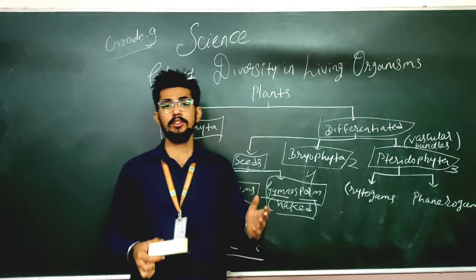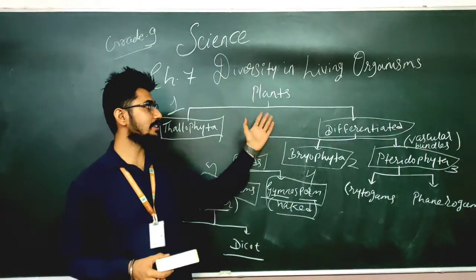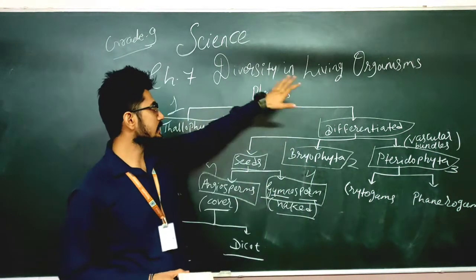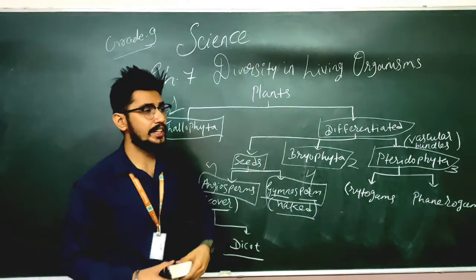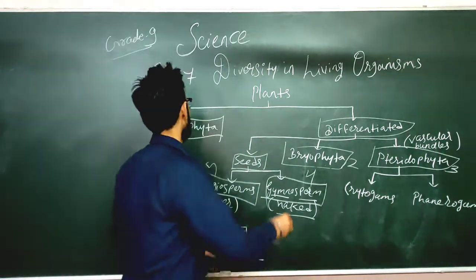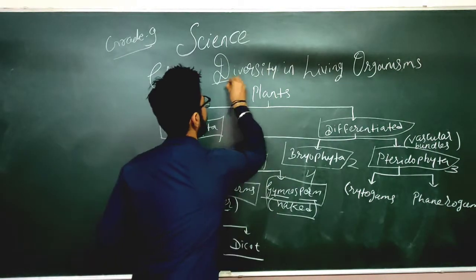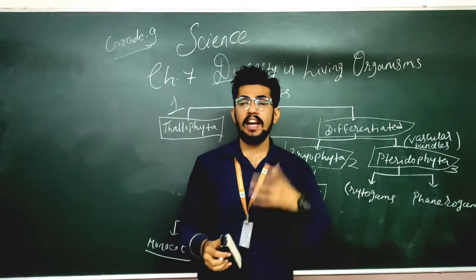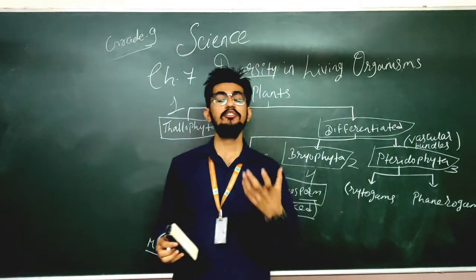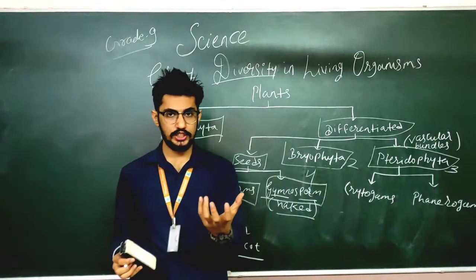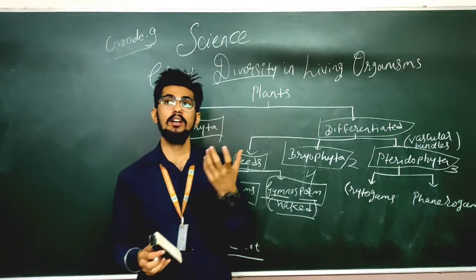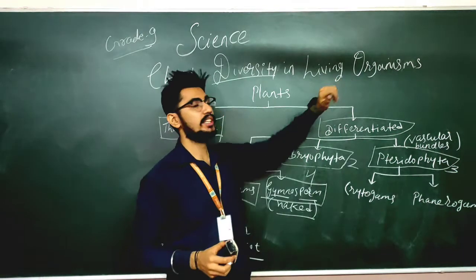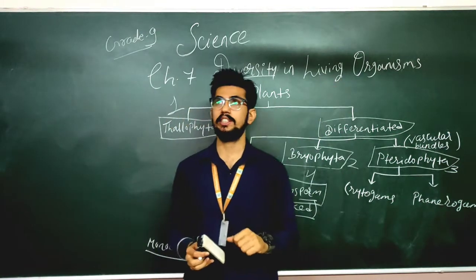In this chapter, we are going to see the diversity in living organisms. Before starting the chapter, let us understand the meaning of the word diversity. Diversity means variations — the different kinds of variations we are able to see in living organisms.